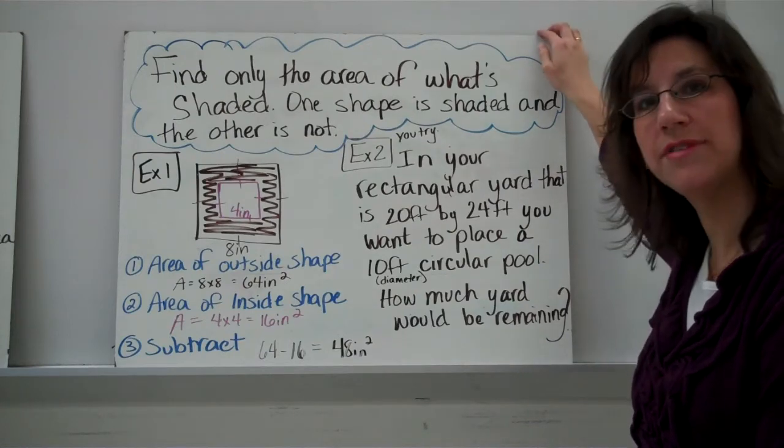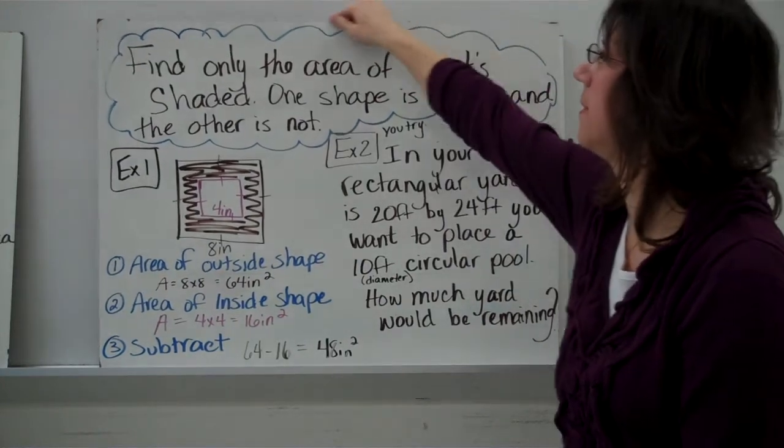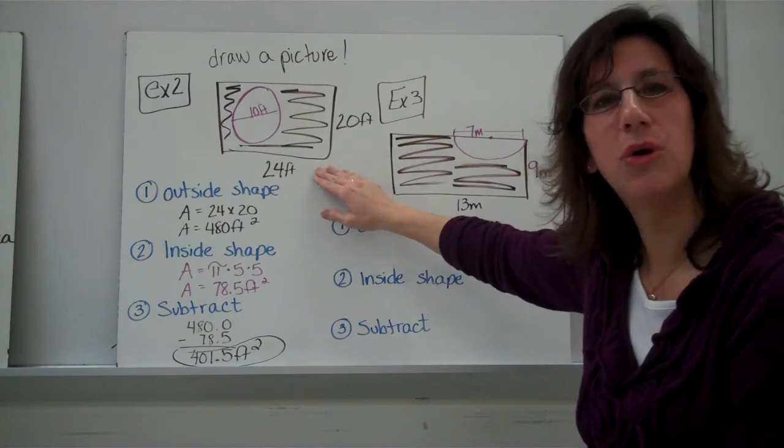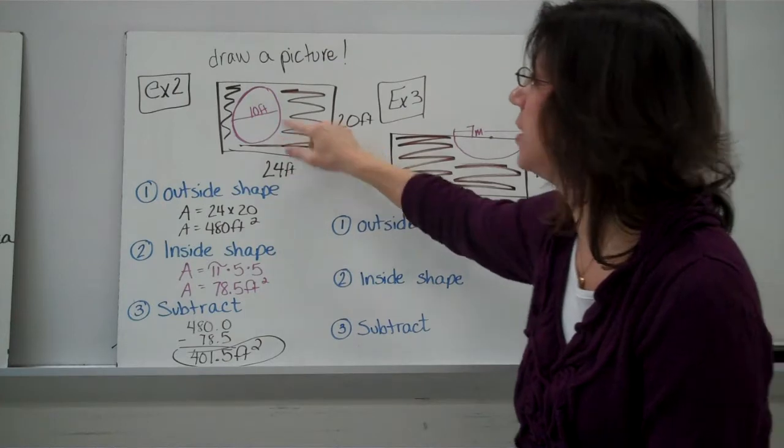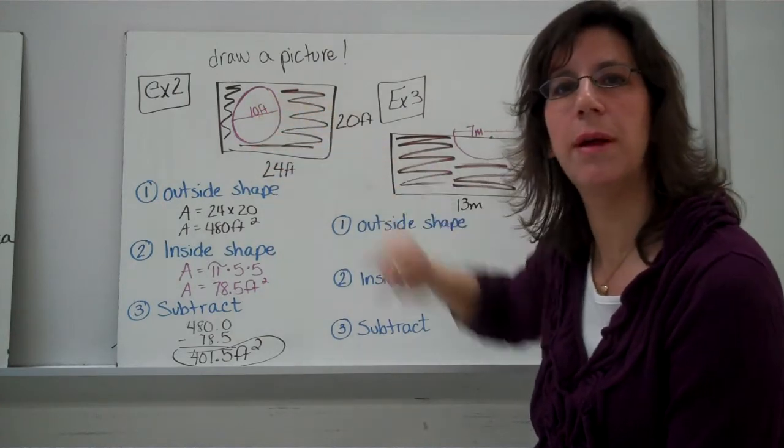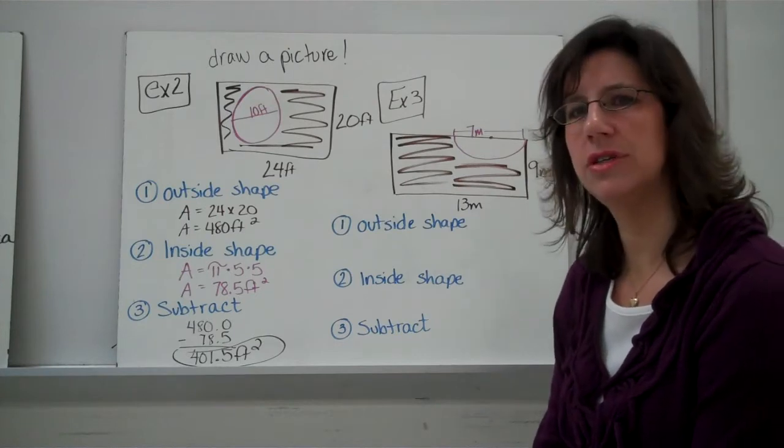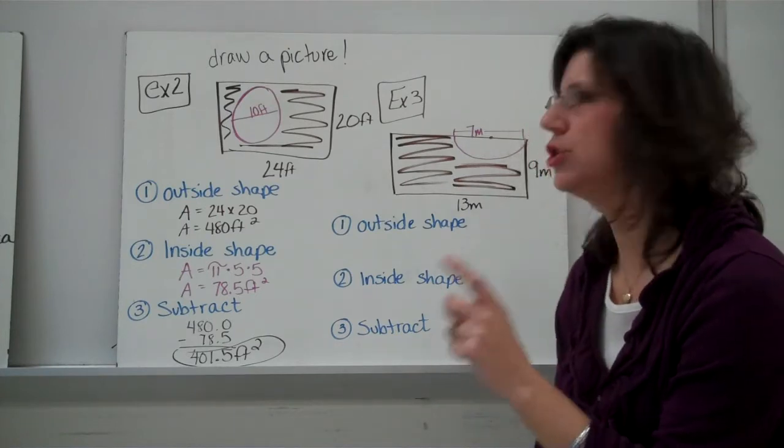Alright. So, now that you have the shape drawn, and you've worked it out. Did you have this shape, or something similar to it? You should have had a rectangle to represent your yard, and then a circle inside of that to represent the swimming pool. Alright. Now, did you notice in the word problem, the swimming pool is a 10-foot swimming pool.